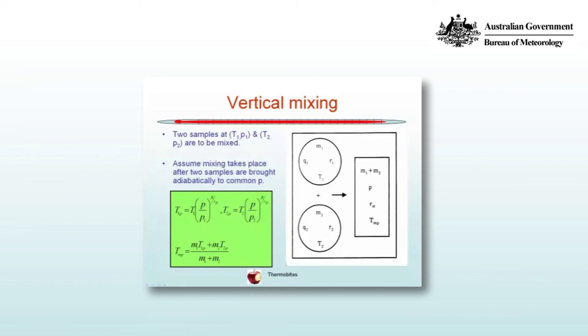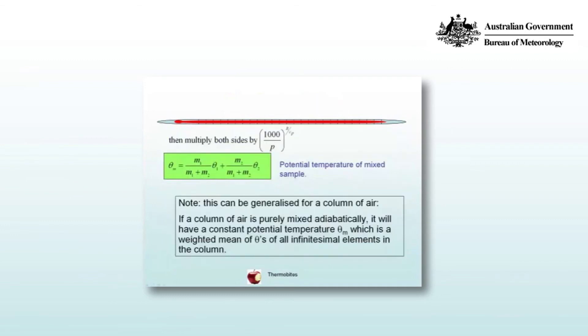So we substitute in the equations for T1 and T2 at the new pressure P into our equation for the mixed temperature Tm at P, and you multiply both sides by (1000/P)^(R/Cp) and so you end up with mixing these two masses you get a mass weighted mean potential temperature. So it is a mass weighted contribution between the two initial potential temperatures.